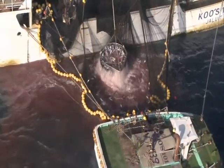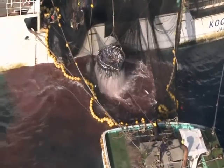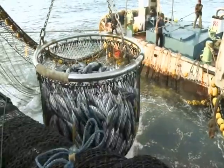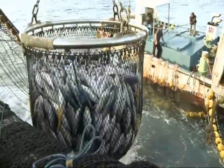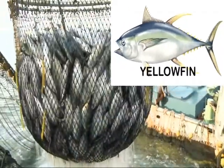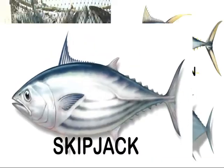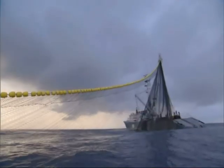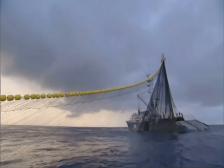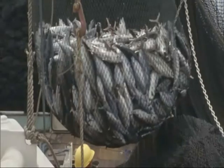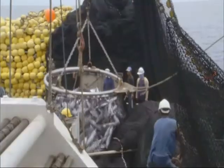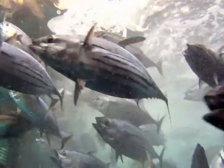Purse seine fishing is a method of fishing that catches mainly skipjack tuna. Compared with other kinds of tuna such as yellowfin and bigeye, skipjack tuna produce more baby fish. This means that at this current time, skipjack tuna can be caught using the purse seine fishing method without causing the skipjack population to decline.